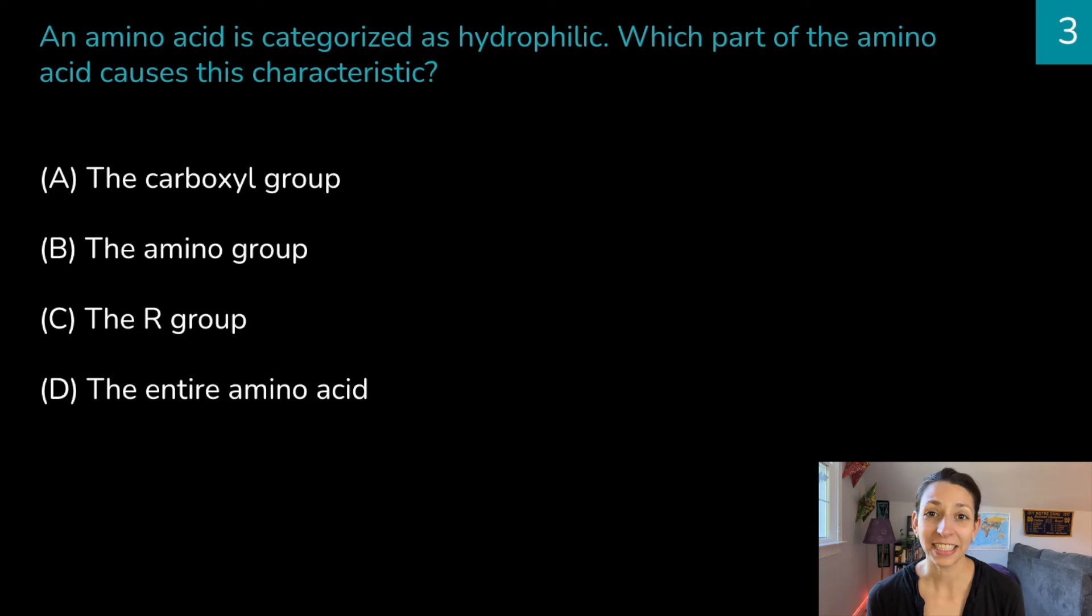All right, next question. An amino acid is categorized as hydrophilic. Which part of the amino acid causes this characteristic? A the carboxyl group, B the amino group, C the R group, or D the entire amino acid? The correct answer is C the R group.